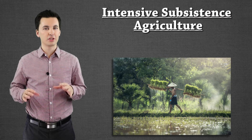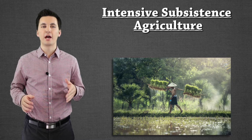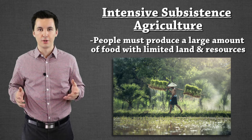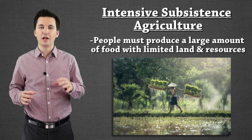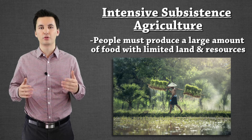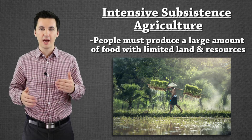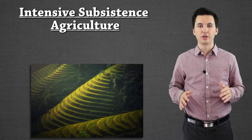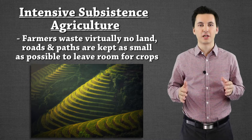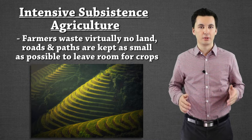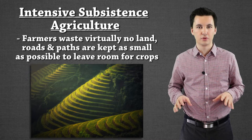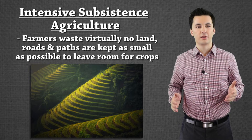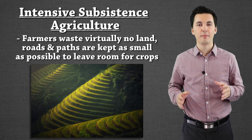Our next type of subsistence agriculture gets broken into two parts — intensive subsistence agriculture. The reason why it's intensive is because people here need to produce a lot of food in a very small amount of land with very limited resources. A lot of times people producing here are given a small amount of land that gets passed down through generations, so people will have multiple plots of land scattered all over. In order to utilize land to the best of their ability, paths are kept very small, roads are almost non-existent on arable land. The goal is to make sure that anything that can produce food is being used to produce food. Animals are kept off the land unless using it to till. The goal is to get as much production as possible and maximize yield.